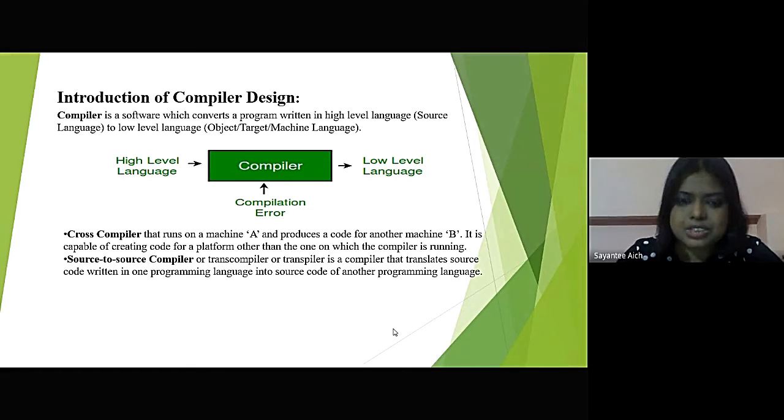And another kind of compiler is source-to-source compiler. This kind of compiler translates source code written in one programming language into the source code of another programming language. This kind of compilers are also known as trans-compiler or transpiler.